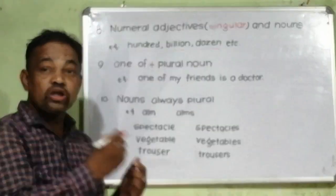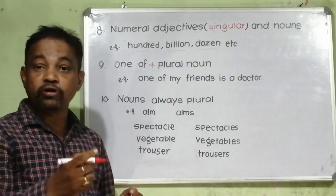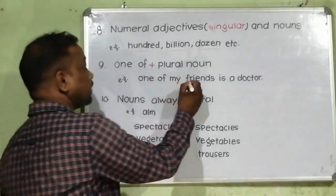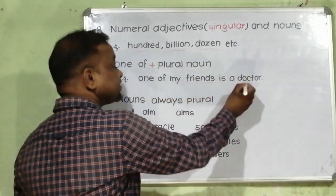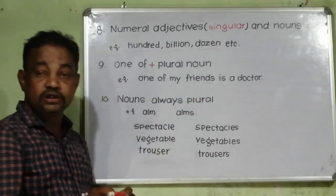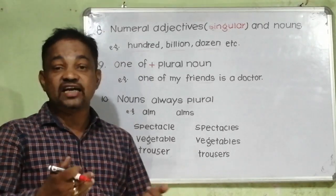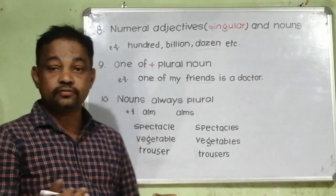Rule number nine: one of plus plural nouns. For example, one of my friends is a doctor. You cannot write one of my friend is a doctor.